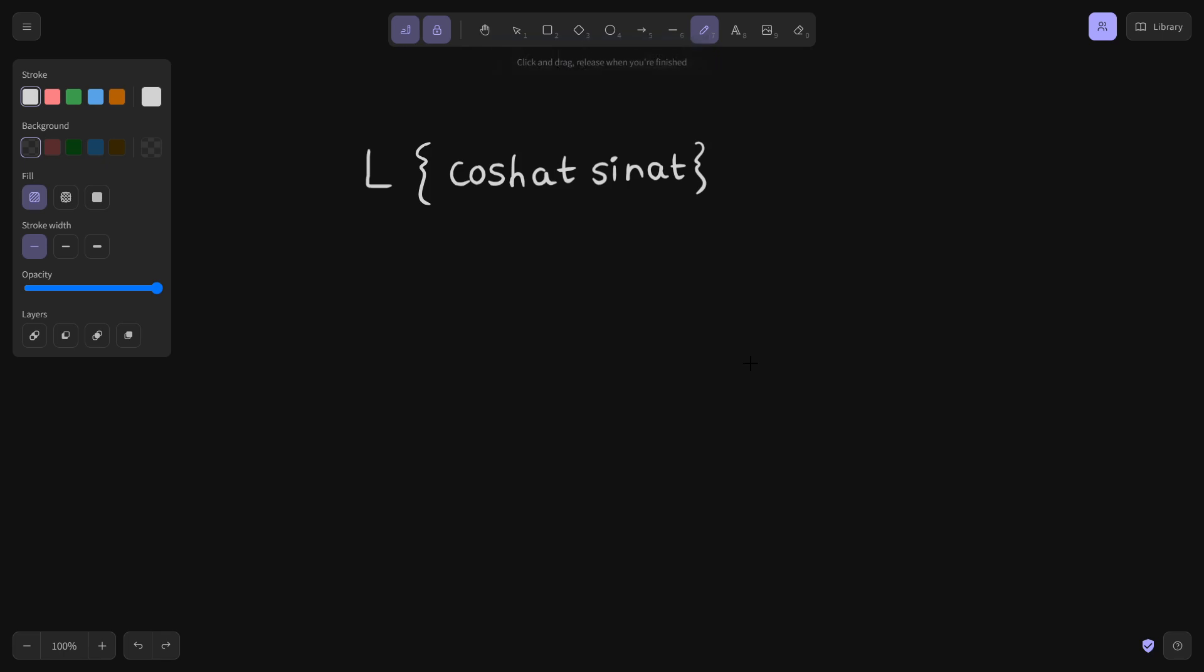Namashkar. Today we will be solving one problem from Laplace transform. It is an interesting problem. It is a combination of hyperbolic cos and normal sine that we have. So how can we solve this?